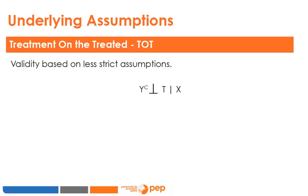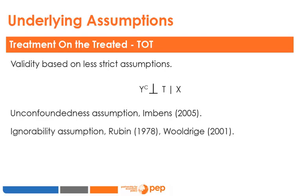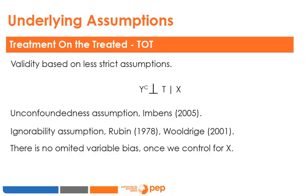The validity of the TOT estimator is based on less strict assumptions, which is one additional reason to be interested in it. The assumption of the TOT estimator is called the Unconfoundedness Assumption by Imbens in his 2005 paper. Rubin, one of the pioneering users of the matching method, calls it the Ignorability Assumption. Unconfoundedness refers to the independence between participation in the treatment T and the potential outcome in the absence of treatment Yc. If unconfoundedness is respected, we can be sure that there is no omitted variable bias once we have controlled for X.